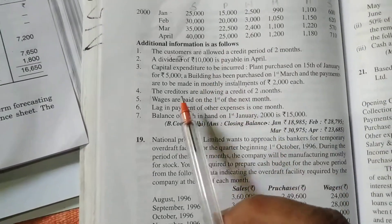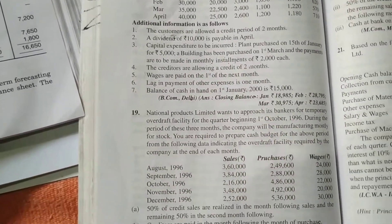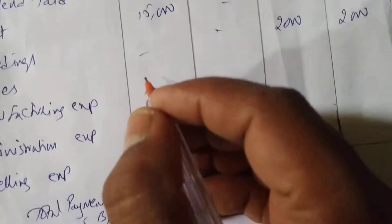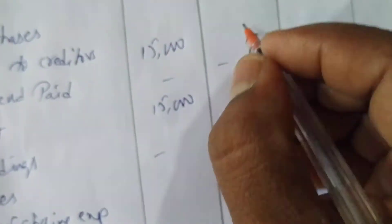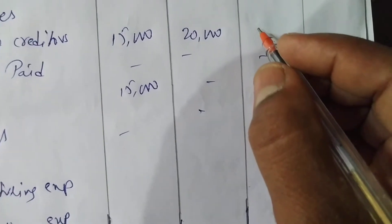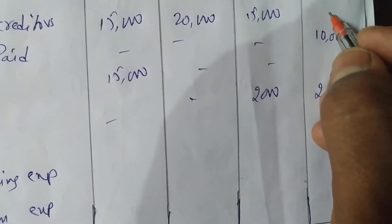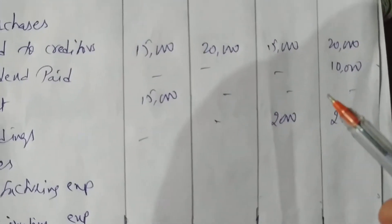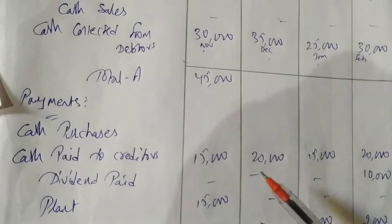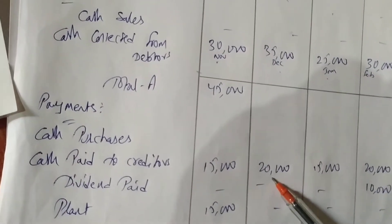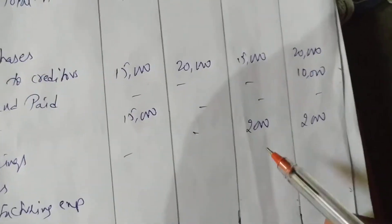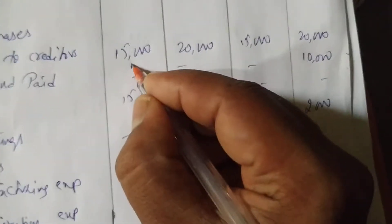Creditors are allowed a credit period of two months — same as sales. So in January we pay November's purchases of 15,000. In February we pay December's purchases of 20,000. In March we pay January's purchases of 15,000. In April we pay February's purchases of 20,000. So the pattern is: November, December, January, February — 15,000; 20,000; 15,000; 20,000.